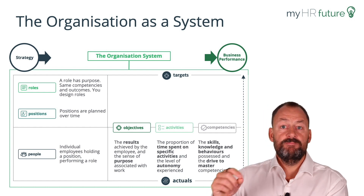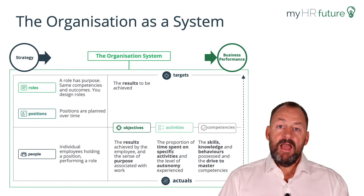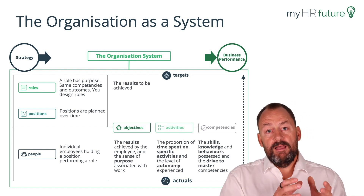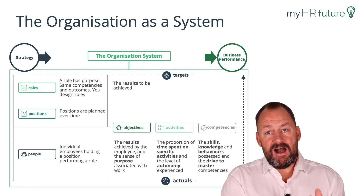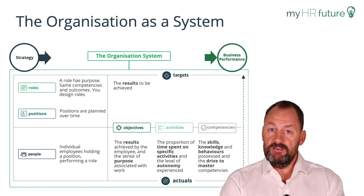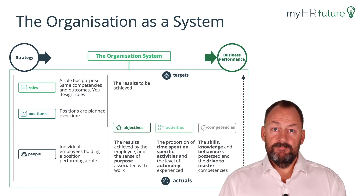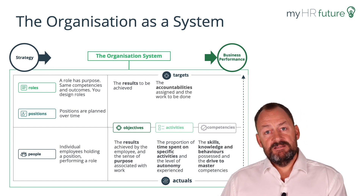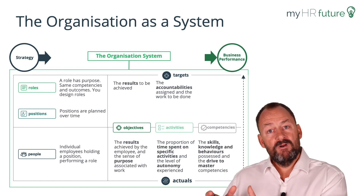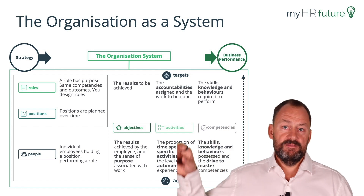To execute effectively and achieve those outcomes, at the role level we set the targets: what are the target outcomes, the objectives that need to be achieved, what are the KPIs that need to be adhered to, what are the milestones you want to deliver, what are the accountabilities, what are you responsible for, and what are the skills and proficiency levels needed to be effective? Those are the targets.